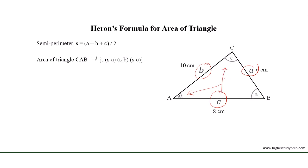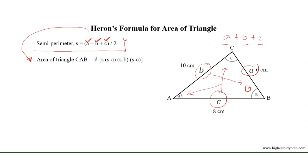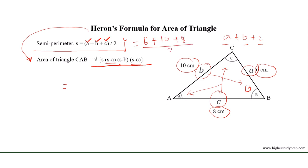The opposite angle of side C is angle C, and the opposite angle of side B is angle B. The semi-perimeter of the triangle is s equals (a plus b plus c) divided by 2, where the perimeter is a plus b plus c. Heron's formula defines the area of a triangle as: area equals √(s × (s−a) × (s−b) × (s−c)), where a, b, c are the sides of the triangle. From the figure, b equals 10, c equals 8, and a equals 6 centimeters.